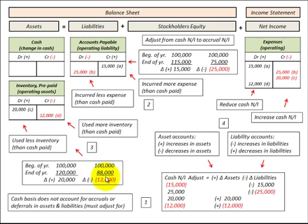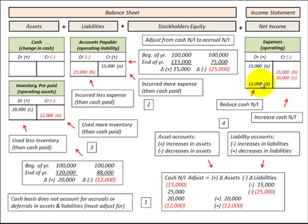In the case where we had a reduction in inventory of twelve thousand dollars, we credit inventory for twelve thousand. This is where we used more inventory than what we paid in cash, so we debit expenses for twelve thousand, increasing expenses, which reduces cash net income because we used more inventory than what we paid in cash.